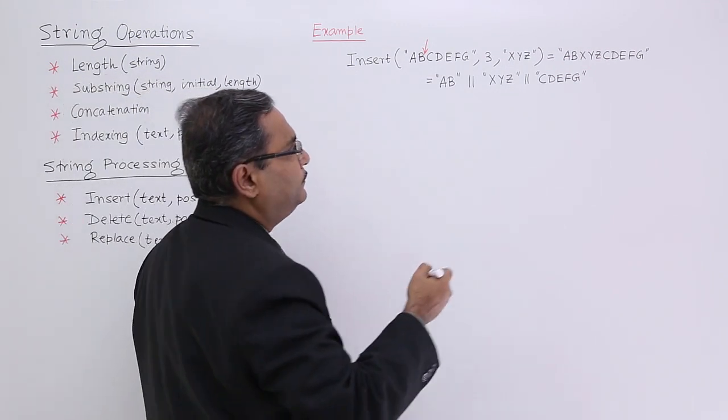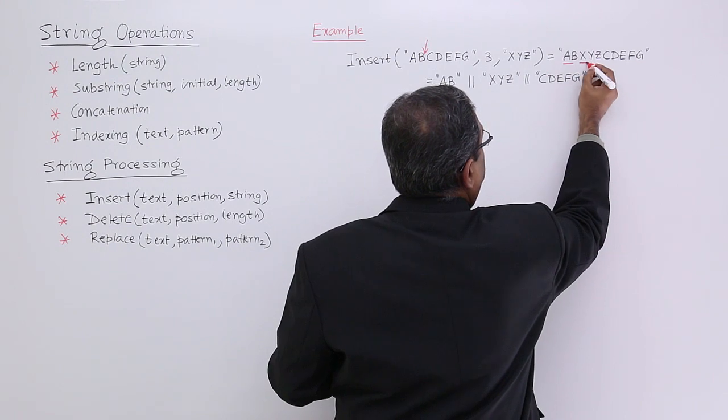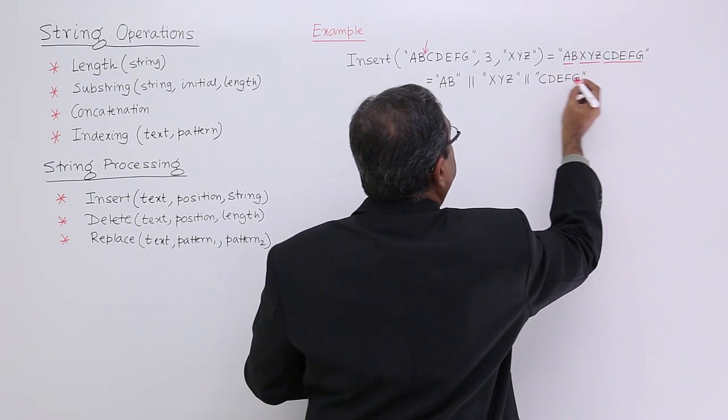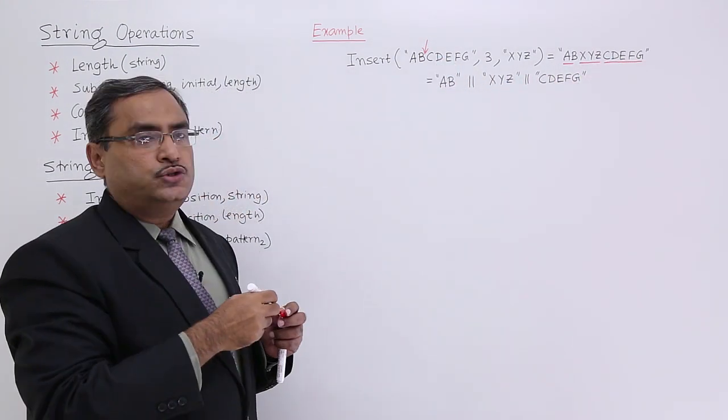AB will be there, then XYZ will get inserted, and the remaining part is CDEFG.